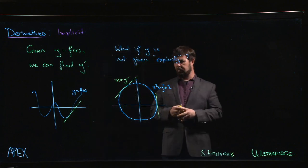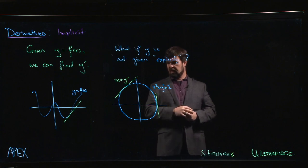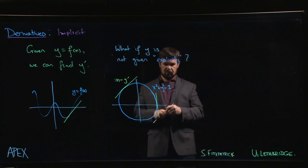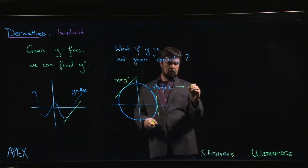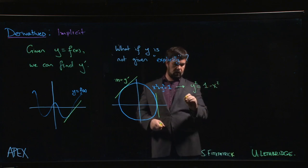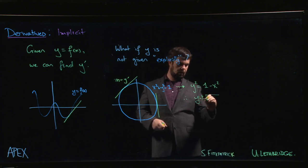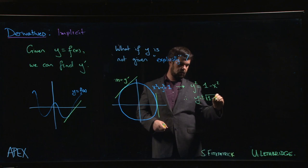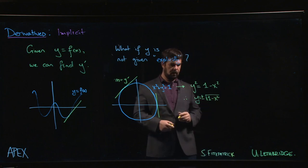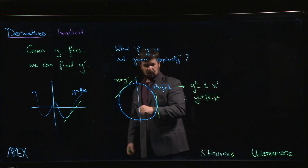We know how to describe a circle. We can describe a circle using an equation like this: x²+y²=1. Yes, it's true we could solve for y. We could say that means that y² is 1 minus x², so that means that y is plus or minus the square root of 1 minus x².